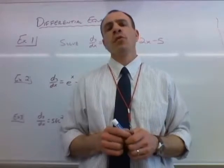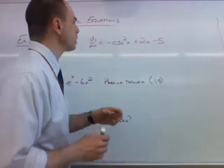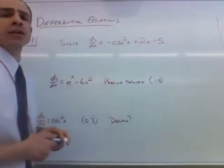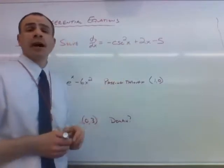Here's a couple of examples to get us going with differential equations. With example number one, we're tasked with finding the solution to dy/dx equals the opposite of cosecant squared plus 2x minus 5.